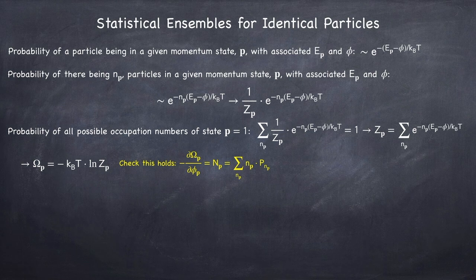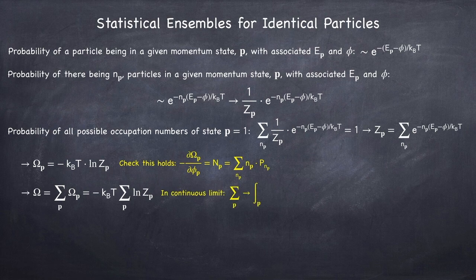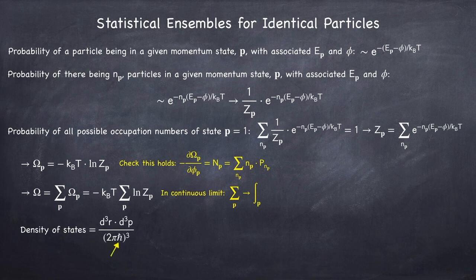This potential is for one momentum state, but in a system you have a whole bunch of momentum states. So if you want the total Landau potential for the system, you have to sum over all momentum states, and in the continuous limit this sum over p turns into an integral over p. In order to convert the sum into an integral, you need to know the momentum density, which is given by quantum mechanics.